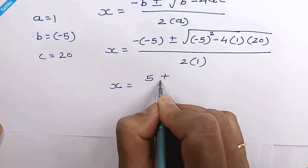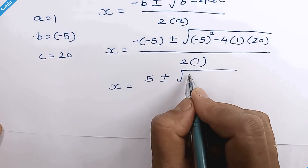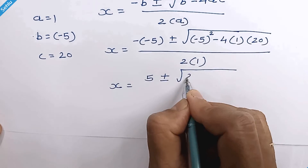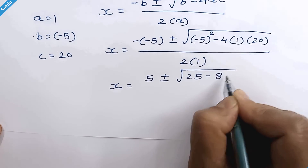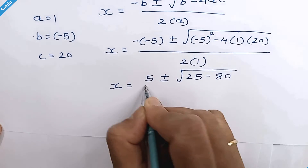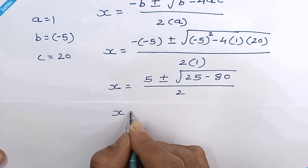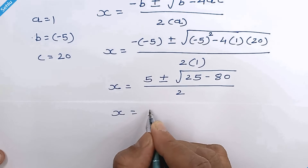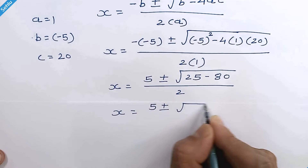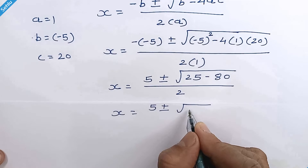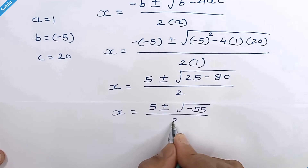So x is equal to 5 plus or minus square root of negative 5 squared, which is 25, minus 80. So we have x is equal to 5 plus or minus square root of negative 55 over 2.